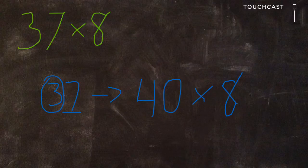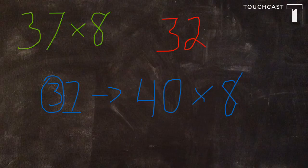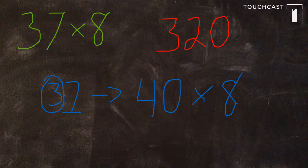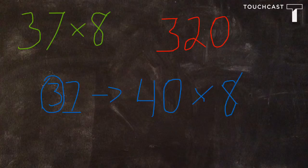And when we do that, 8 times 4 is 32, but since it is a 10 times a 1, it's going to give us a 0 in the 1's place. Because 10 times 1 is 10, so 40 times 8 is going to be 320. So our estimate for 37 times 8 is 320.